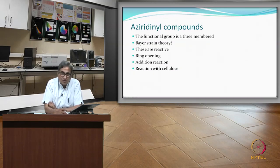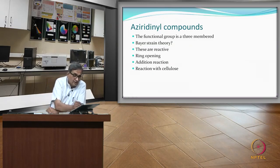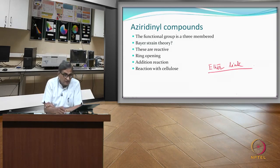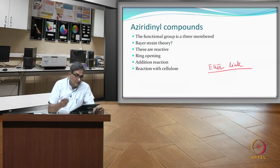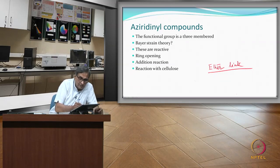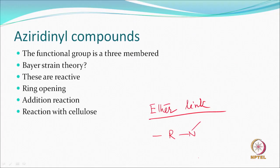Reaction with cellulose forms an ether link. To make a cross-link, you need a bifunctional agent — a structure with two aziridine groups — which can react with hydroxyl groups on two different cellulose molecules, first by ring opening, generally in acidic medium, to form a cross-link.